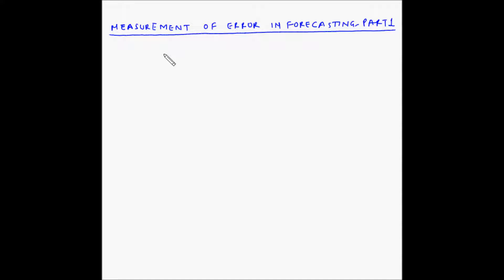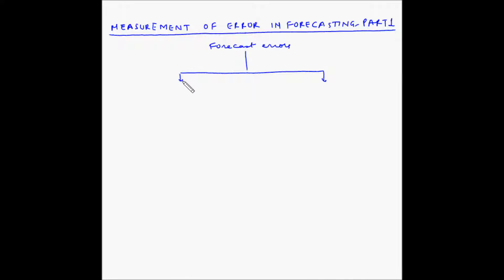Welcome to the video on measurement of error in forecasting. Forecasts almost always contain errors. The forecast errors can be classified into two types: the first is bias errors and the second is random errors.